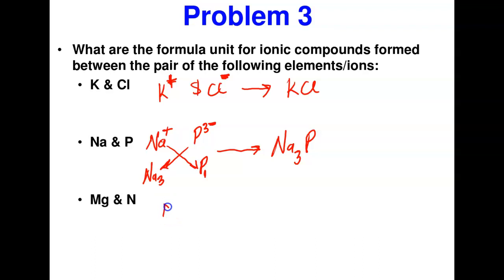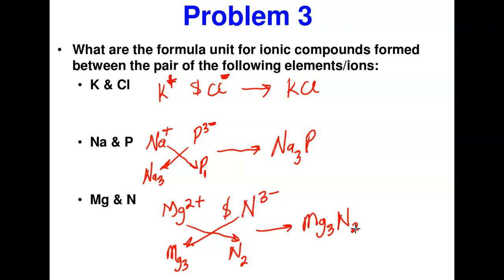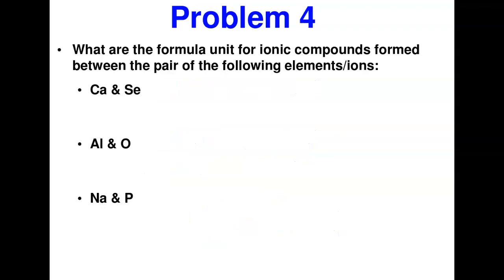For magnesium and nitrogen: magnesium is in group 2, so the charge is Mg²⁺. Nitrogen is in group 5, so the charge is 3−. Swap the charges — magnesium takes the 3 from nitrogen and nitrogen takes the 2 from magnesium — giving Mg₃N₂. That is the correct formula for the compound formed from magnesium and nitrogen.